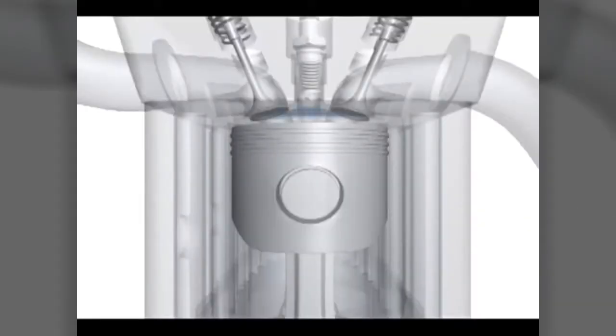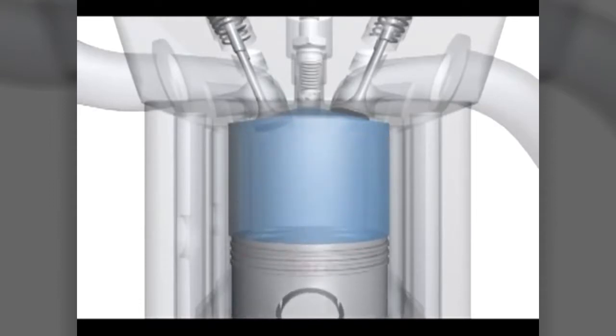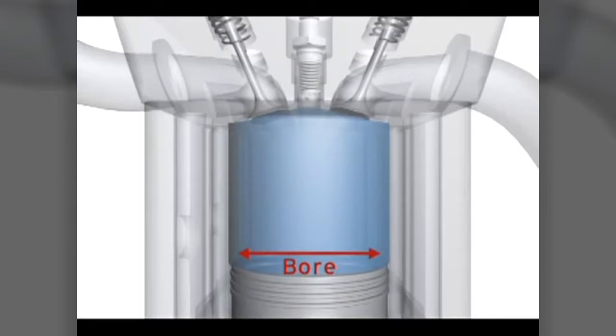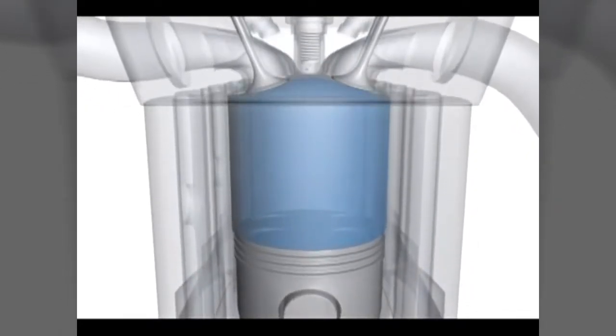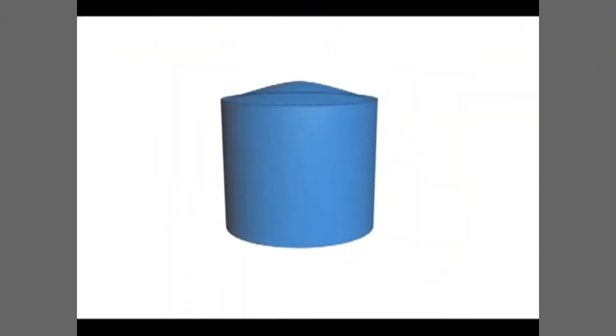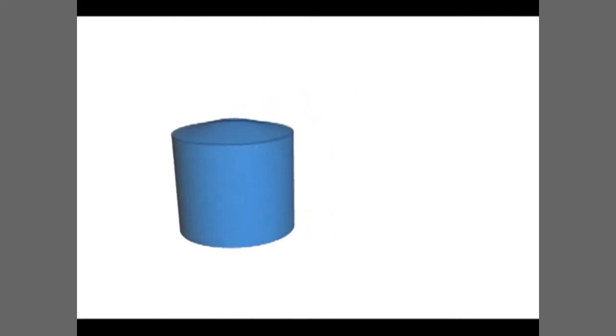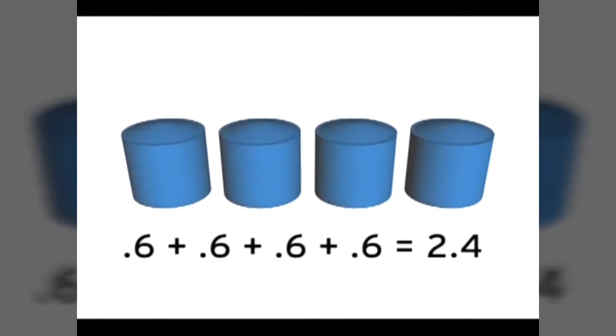Engine displacement is how the internal size of an engine is described. It's measured as the cylinder bore times the length of the piston's stroke. This is multiplied by the total number of cylinders and is usually expressed in liters or cubic centimeters. For example, a 2.4-liter four-cylinder engine has a total displacement when adding together all four cylinders of 2.4 liters.